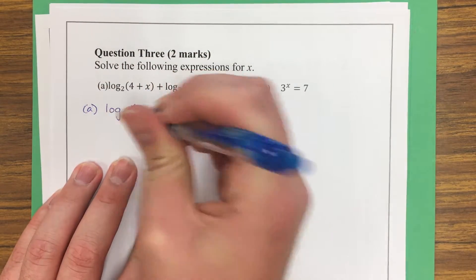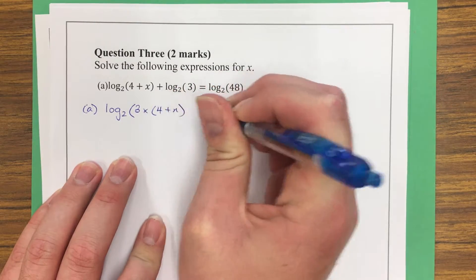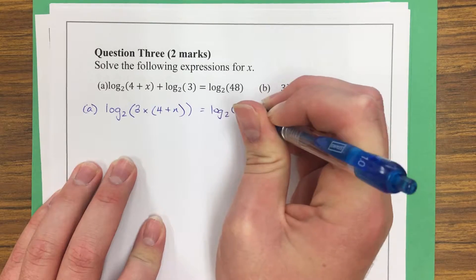this would become 3 times (4 + x) is equal to log₂(48).